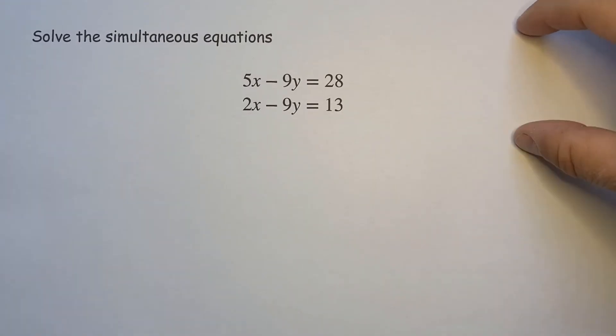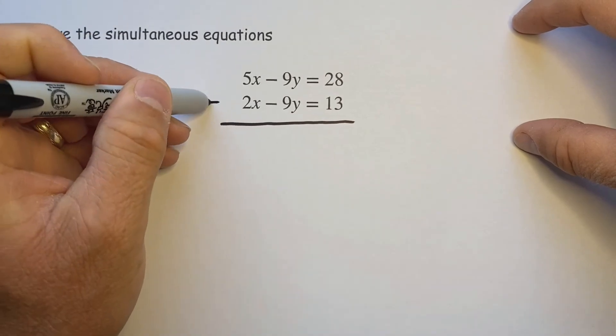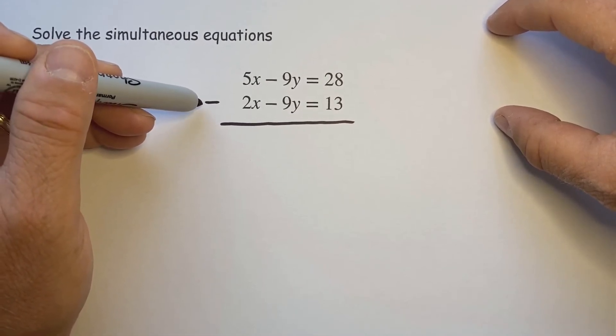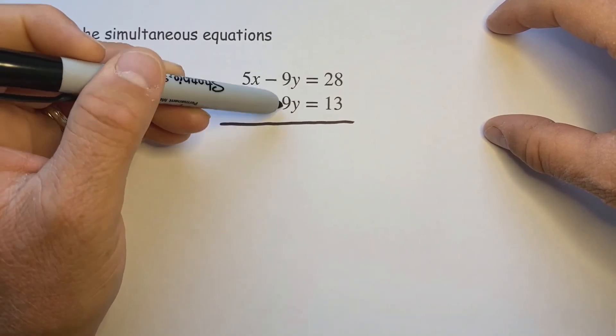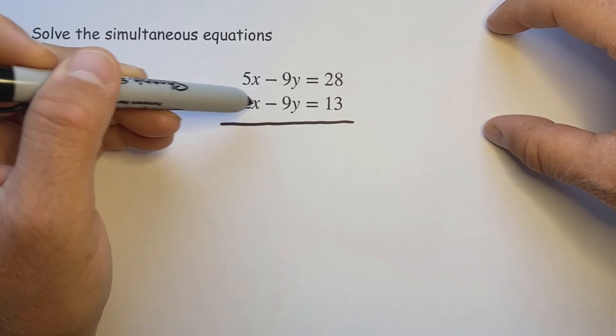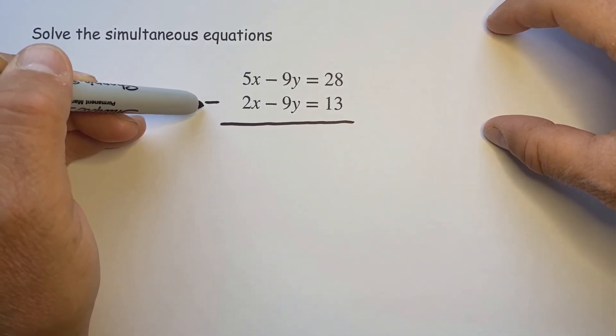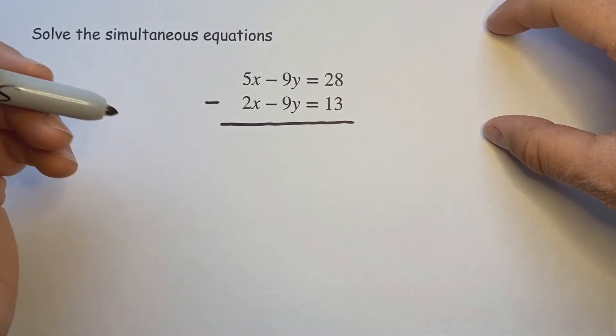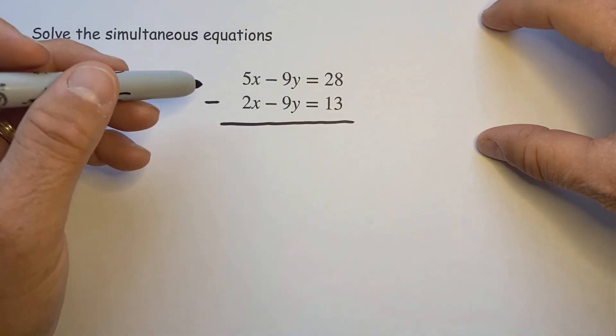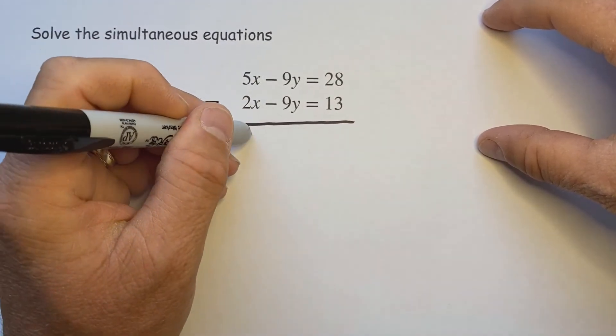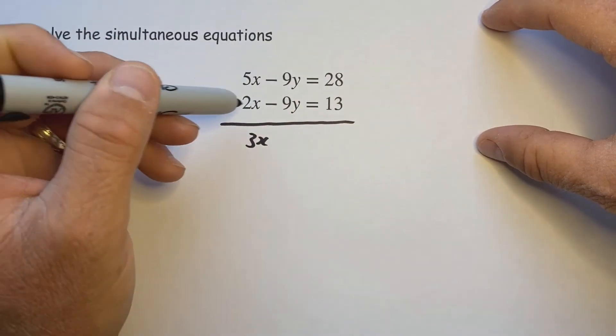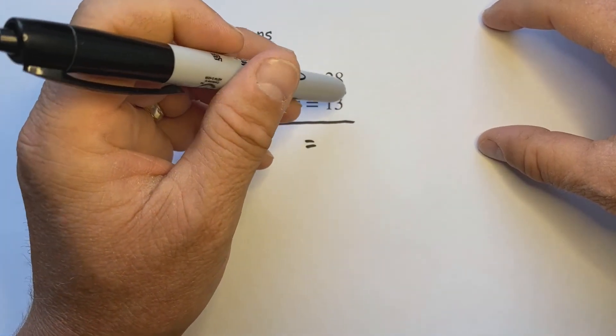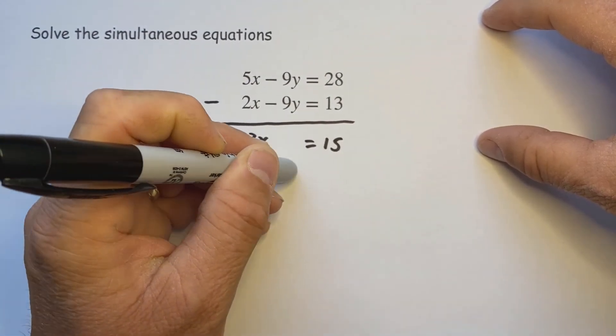Do another one like that. So here in order to eliminate the minus 9 y's we have to subtract. And what you'll notice with every single one of these examples where we are subtracting, the numbers here are exactly the same and the signs are exactly the same. If the signs are the same it will always be a subtraction, whereas if you go back to lesson one you'll see that the reason why we're adding is that these signs were always different. That's how you decide whether you can add or subtract. As we move on with this topic, anyway we're subtracting, 5x take 2x is 3x, minus 9y take 9y cancels, equals 28 take 13, once again 15. So x works out to be 5.